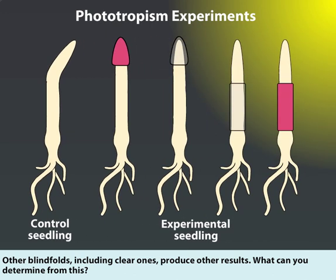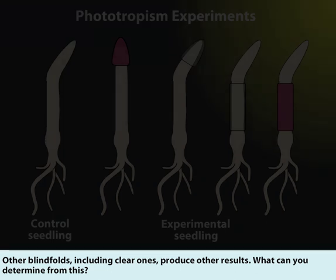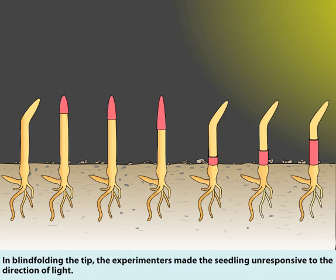Other blindfolds, including clear ones, produce other results. Charles Darwin and his son Francis performed these types of experiments and determined that the tip of the coleoptile is the light-sensitive region. In blindfolding the tip, the experimenters made the seedling unresponsive to the direction of light.